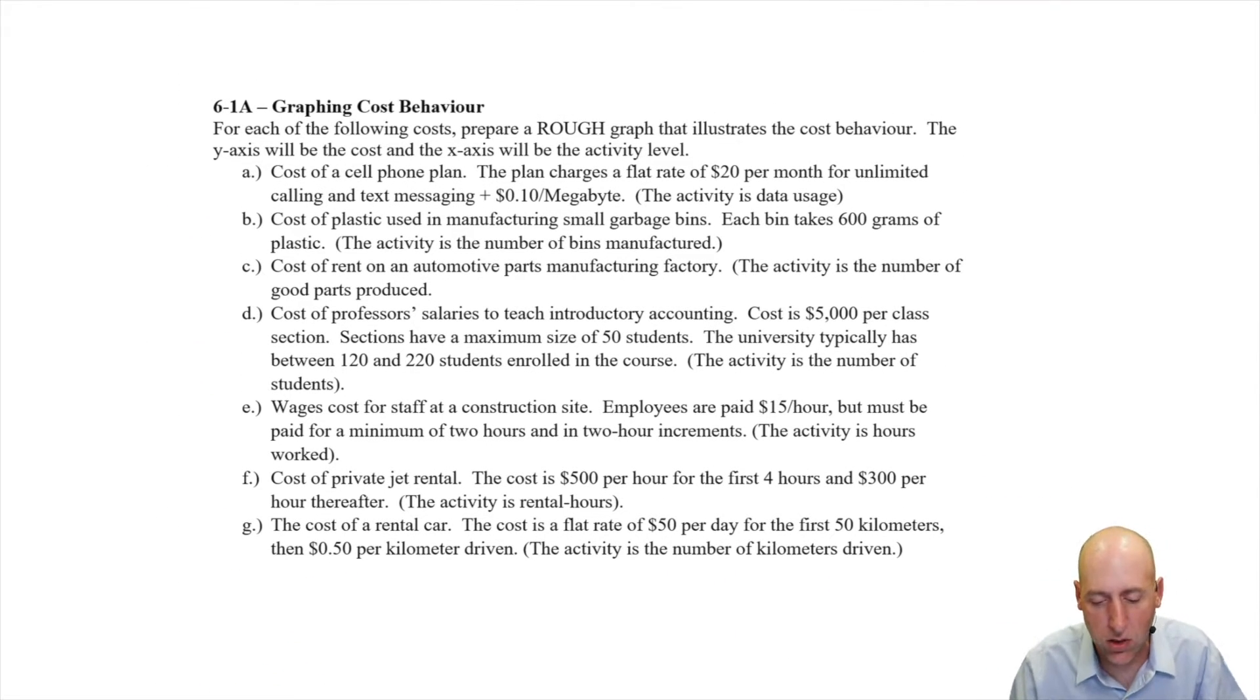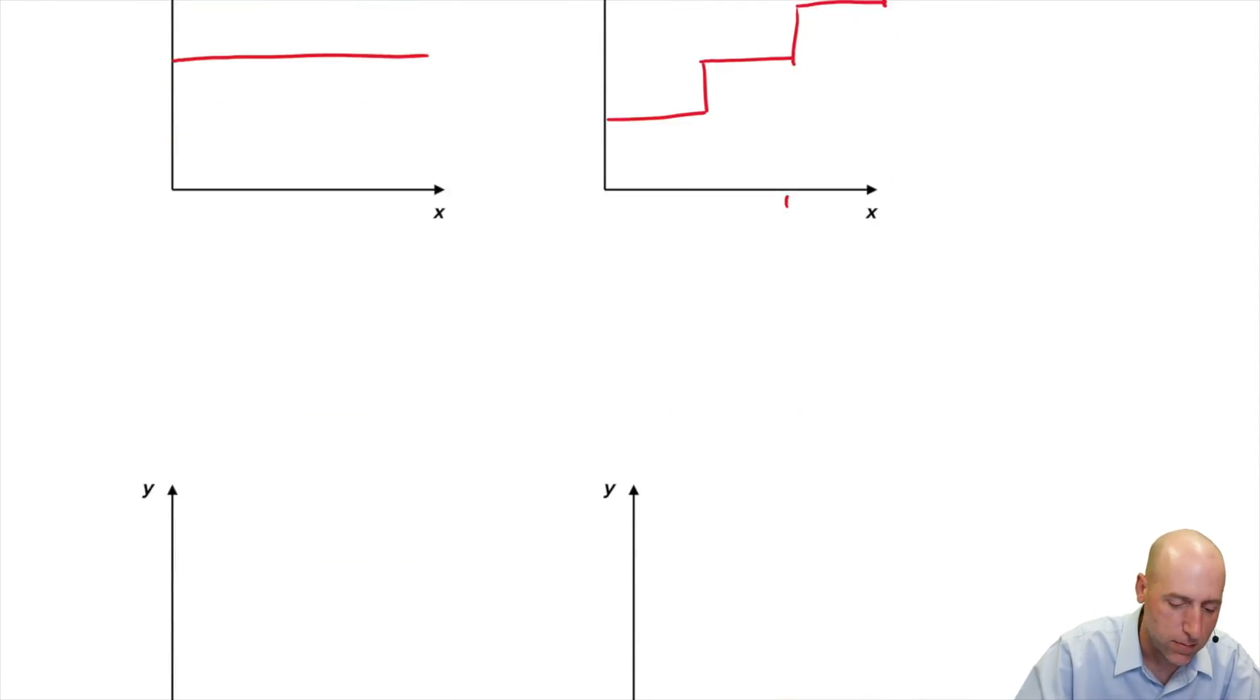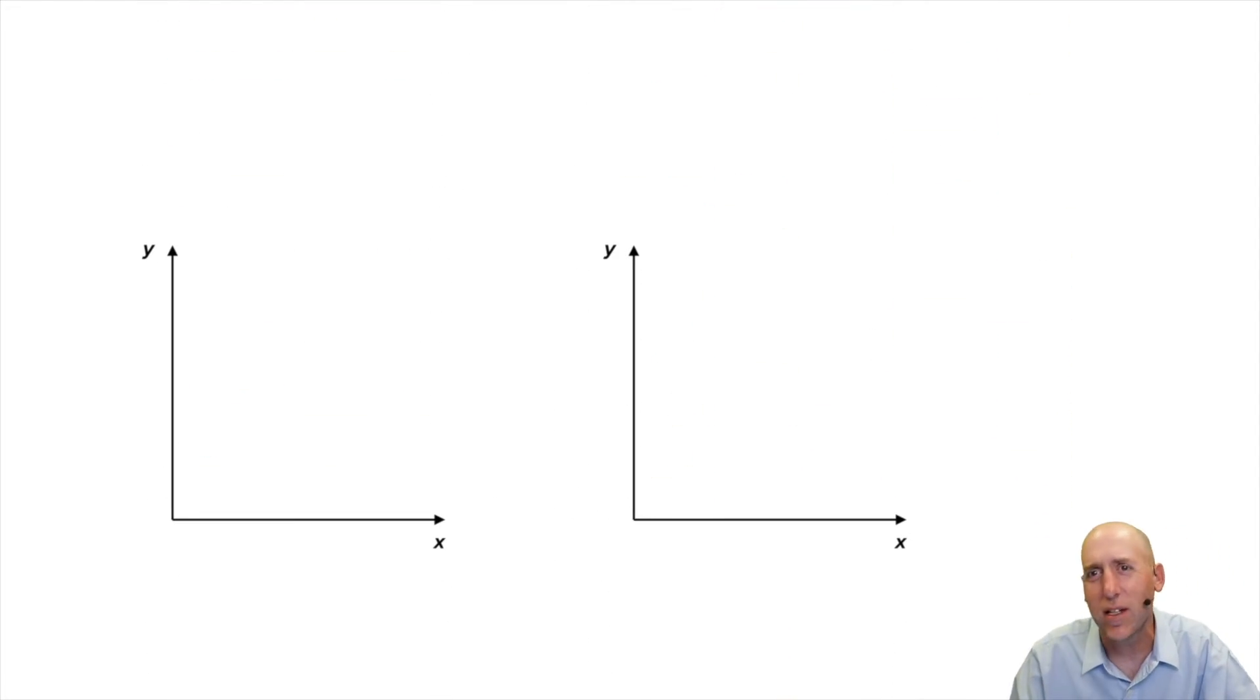E, wages for staff at a construction site. Employees are paid $15 an hour, but must be paid for a minimum of two hours and in two hour increments. So every time they get called in, it's a minimum of two hours and they get paid in two hour increments. All this means is wages in an intro managerial accounting course are generally thought of as variable. We can bring in employees when we want, we can send them home when we want.